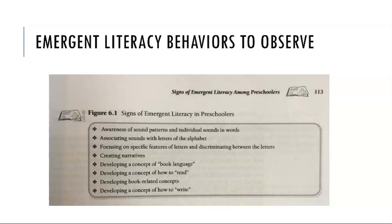We want to observe whether they are developing a concept of how to read even though they can't fluently read yet, if they're developing book-related concepts in terms of what books are, what they're used for, and what the different parts of a book are. And if they're developing a concept of how to write, again even if they're not writing yet.